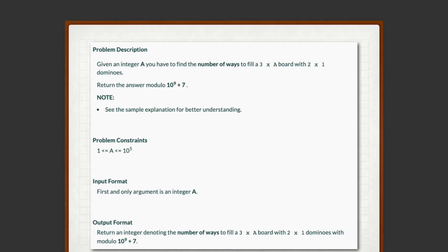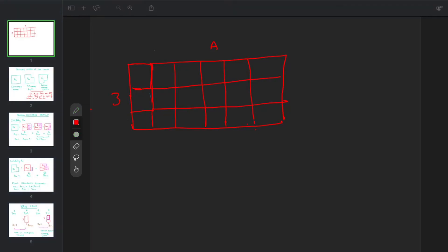Today we are going to discuss a dynamic programming problem. Given an integer n, we have to find the number of ways to fill a 3×n board with 2×1 dominoes. We have to return the answer modulo 10 to the power 9 plus 7, as the answer can be very large.